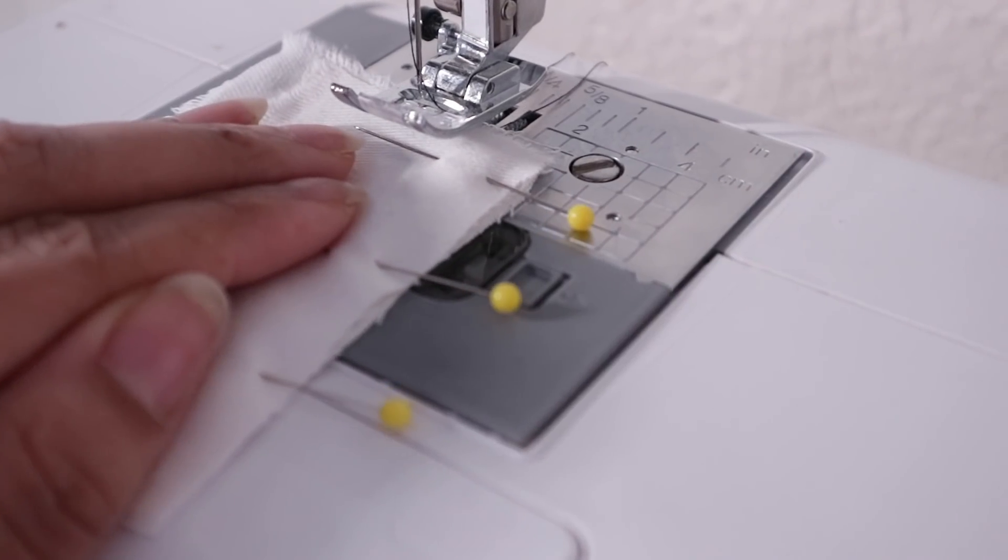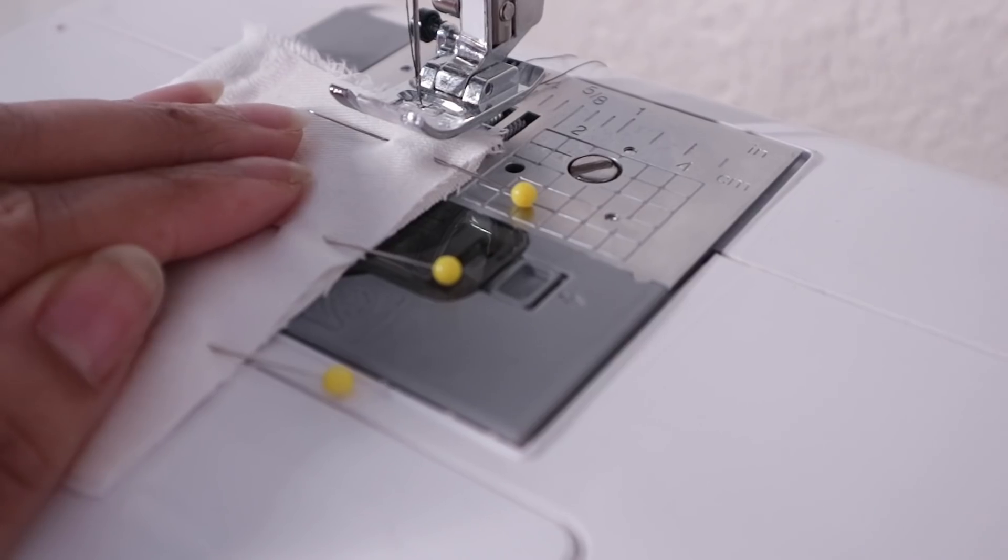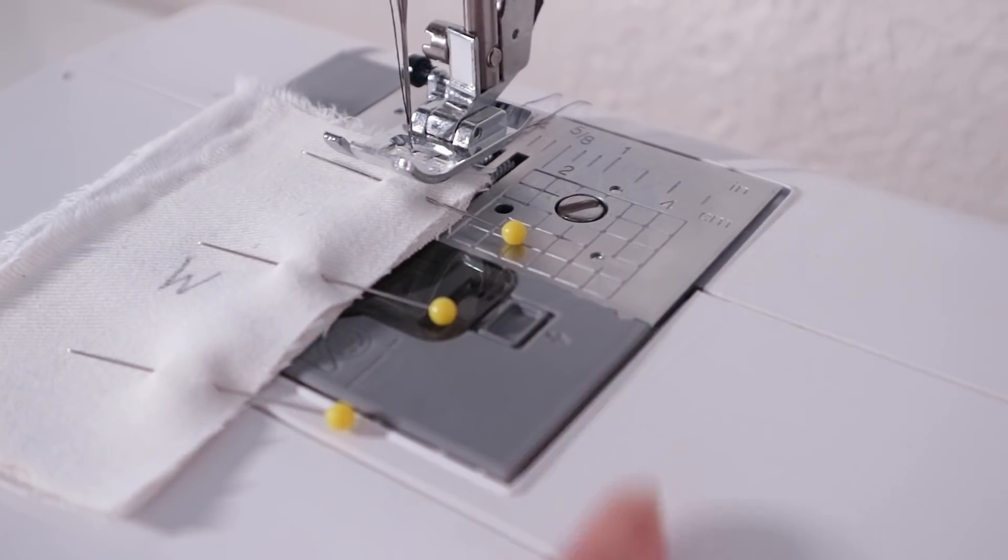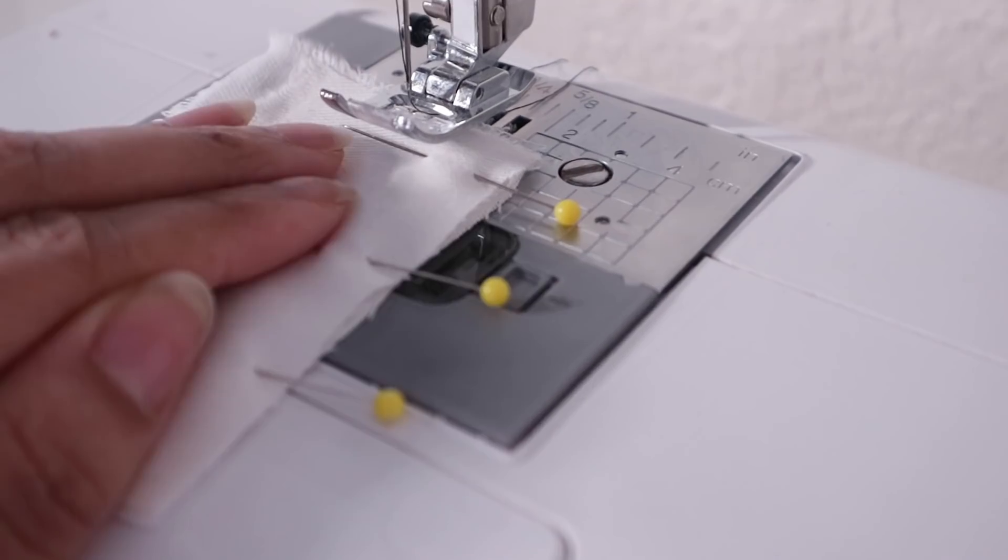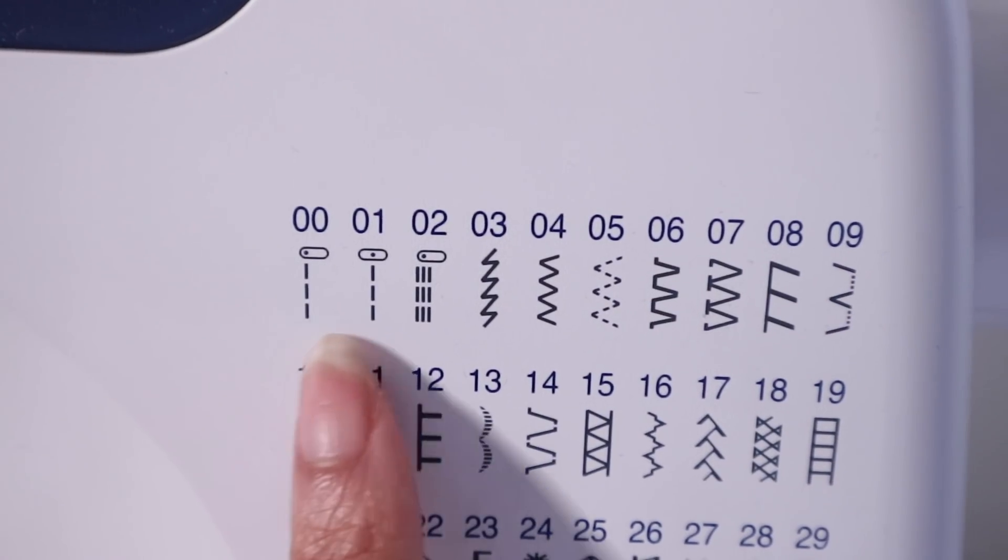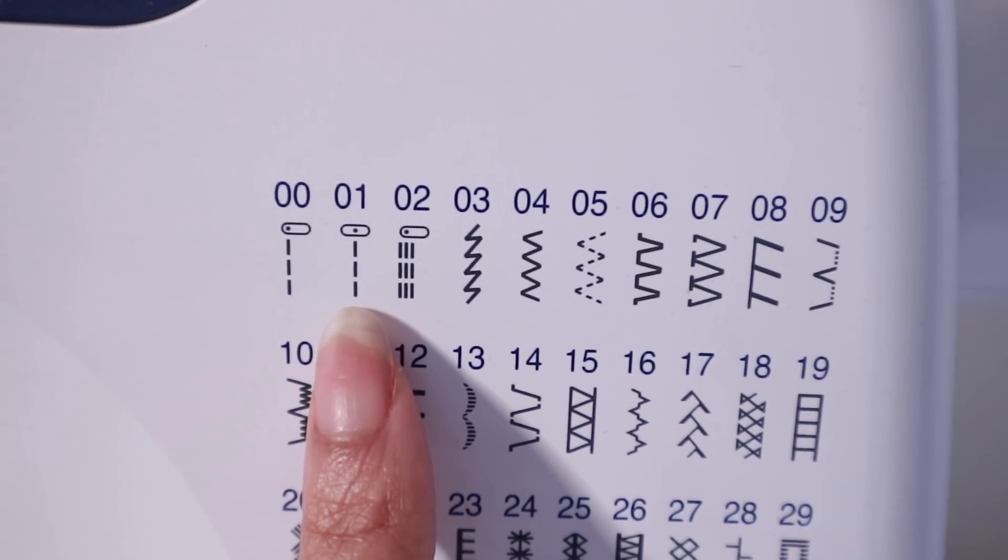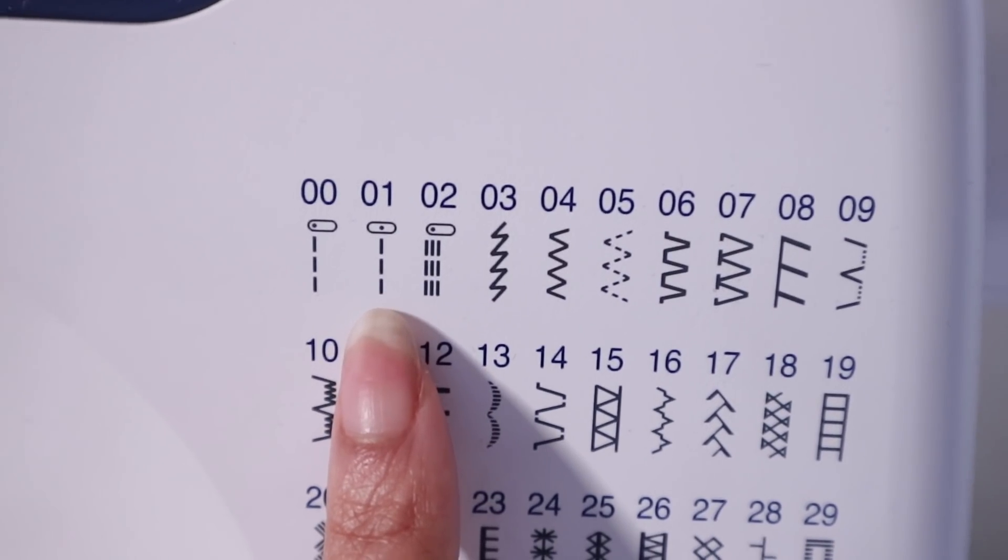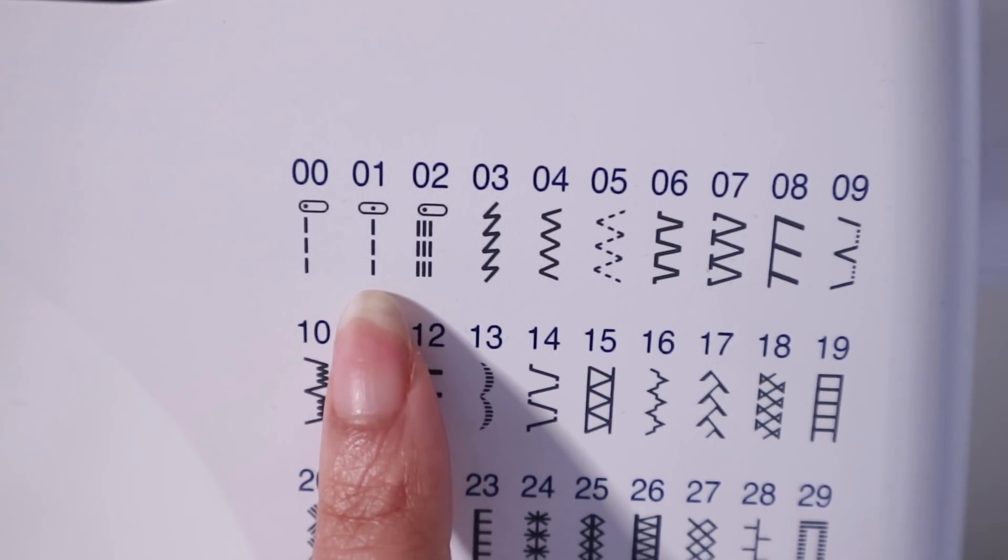So now we're actually ready to get started, but first I need to determine how much seam allowance I want to give myself. So that's what these markings are on the side of the presser foot. Just keep in mind that these numbers will be affected by the position of your needle if you have more than one for a straight stitch, which is what I'm showing you guys here now. As you can see, one of them positions the needle in the middle, while the other positions the needle to the left.